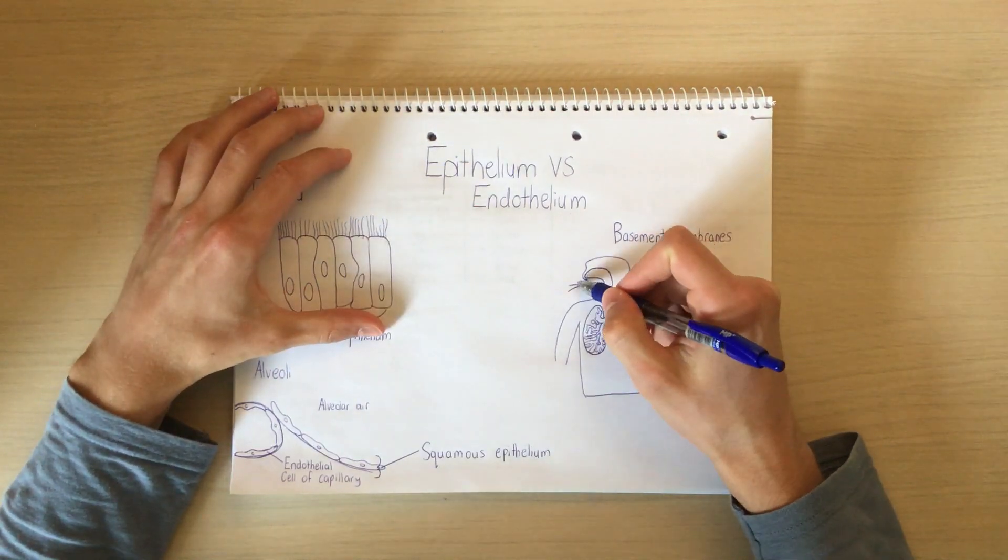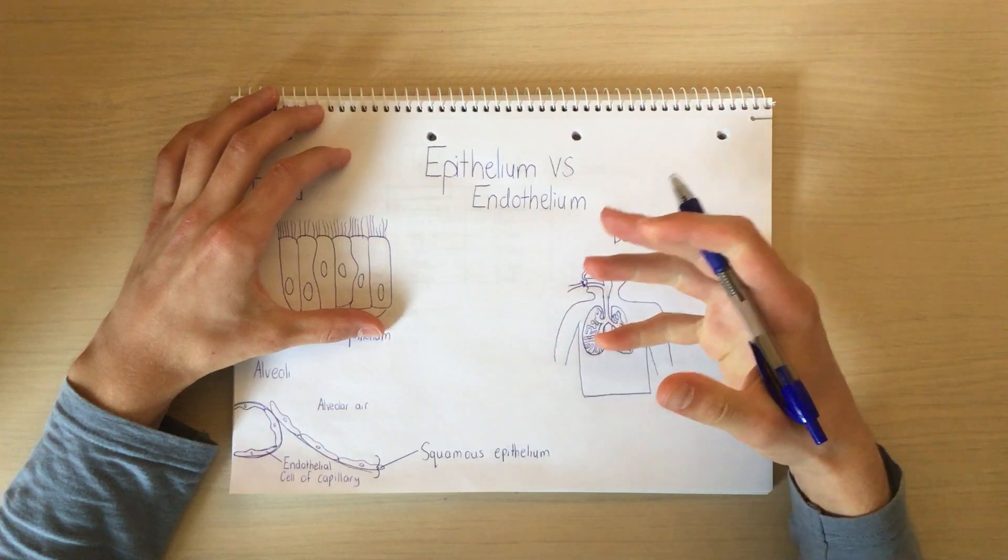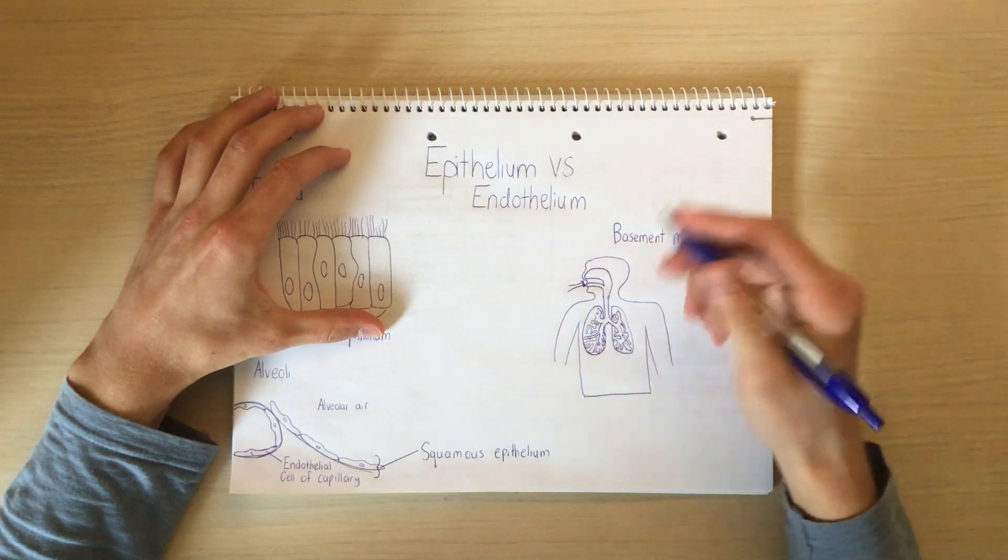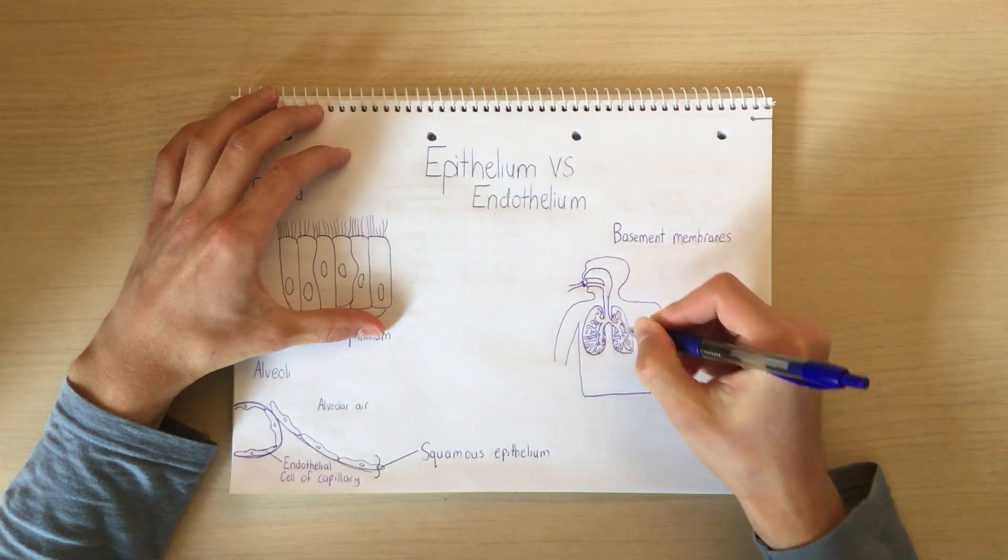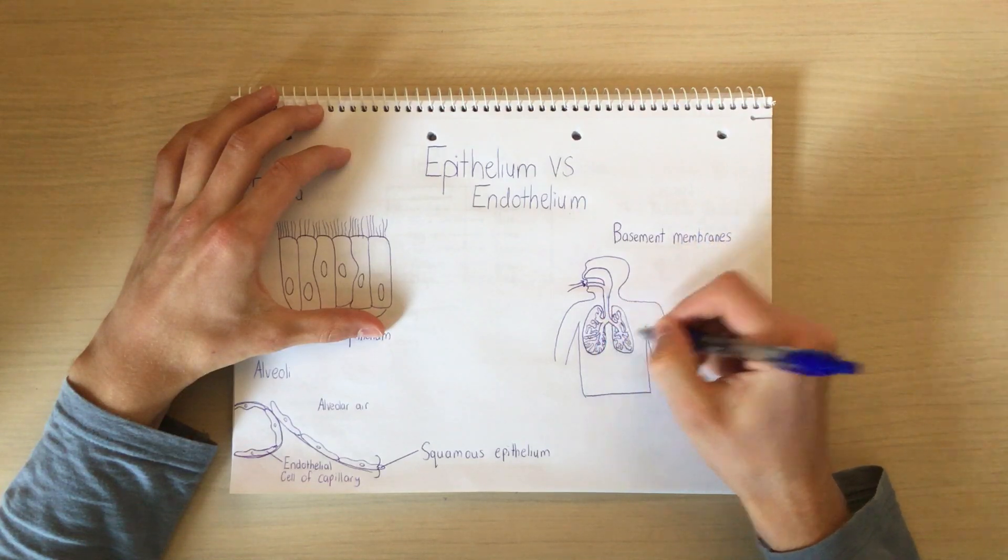If we look here, we have our nasal cavity and our oral cavity through which we inspire air. Now, that air will pass through the trachea, through the bronchi, through the bronchioles and then it will reach the alveoli.